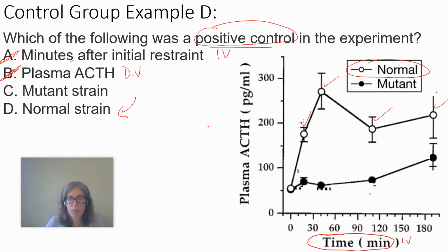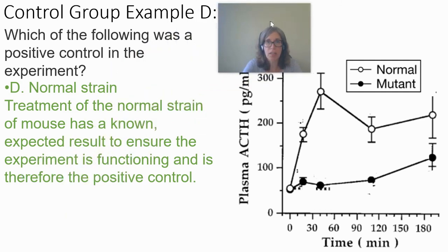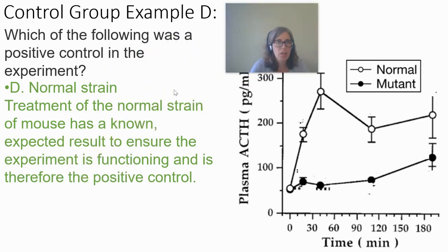So the answer here is the normal strain. Treatment of the normal strain of mice has a known expected result — to ensure the experiment is functioning — and is therefore the positive control. If they looked for a negative control here, I would guess it would be the amount of ACTH when the mice are not being restrained. So that would be the results right at time zero — the normal baseline amount of ACTH, around 50 picograms per mL, which is what you'd get at zero minutes for every strain before being exposed to the stress.